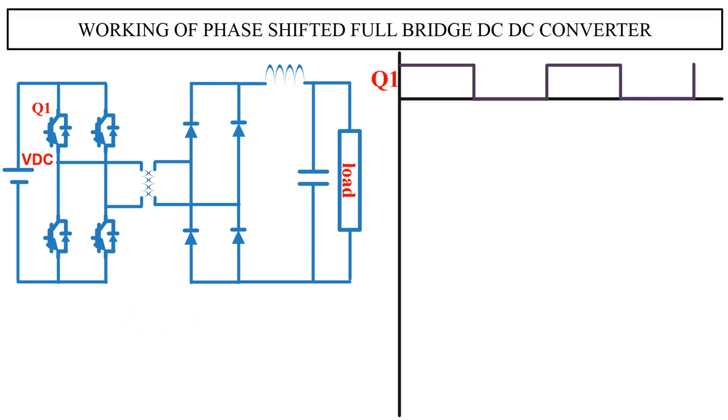This is the PWM for switch Q1. To avoid shoot through, the PWM signal for Q2 should be 180 degrees out of phase with respect to Q1. So this is the PWM for switch Q2.